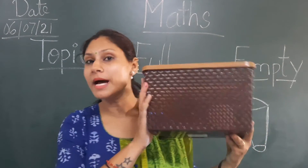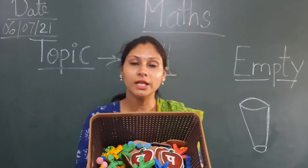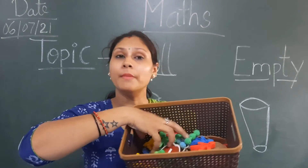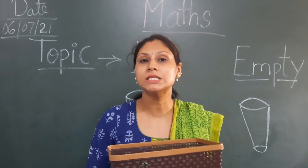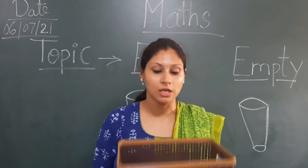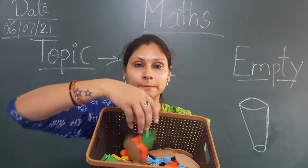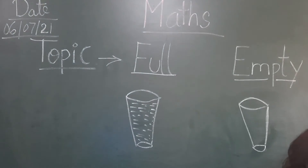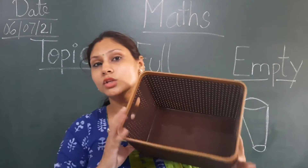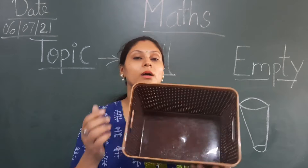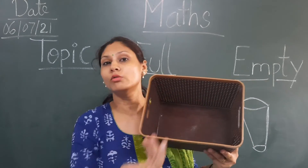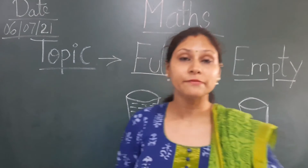Now I have this basket full of toys. Maam ke paas ek basket hai jis mein dheer saare toys bharai hue hain. See, there are many toys, so we will say this basket is full of toys. And now — is there any toys? No. So this basket is empty. Ismae kuch nahi hai. So what is full and what is empty?